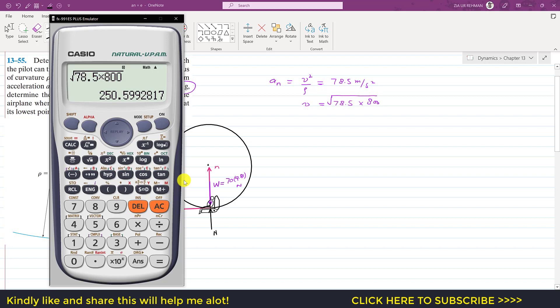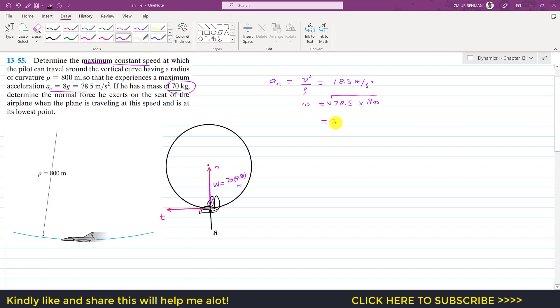.59 or we can say that it is approximately 251 meter per second. So this is that maximum constant velocity with which the airplane is moving.